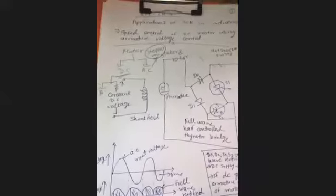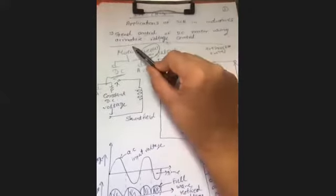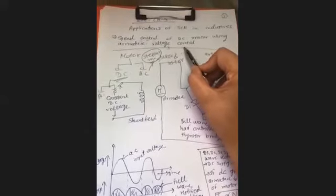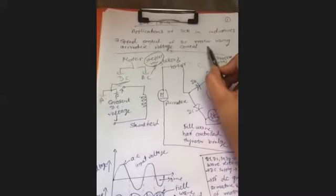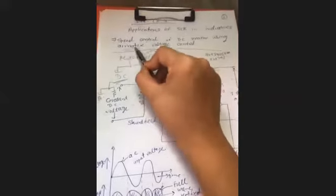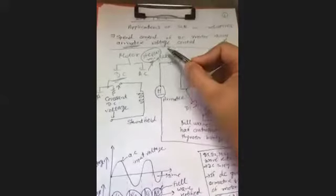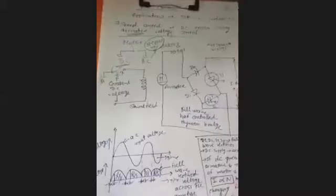The stepper motor is driven by pulses and digital signals — it uses a digital input of 1 or 0. For DC motor speed control, we use armature voltage control or field voltage control.